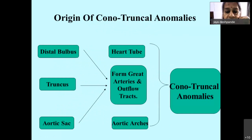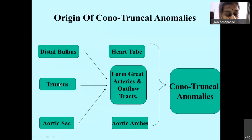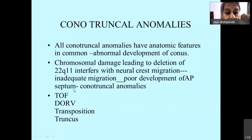For conotruncal anomalies, you need to know about the development of the heart tube, the formation of great arteries and outflow tract, and the aortic arches — the major parts being the distal bulbus, the truncus, and the aortic sac. All conotruncal anomalies share abnormal development of the conus, many related to microdeletion of chromosome 22q11 with neural crest migration failure causing poor development of the aortopulmonary septum. Examples include tetralogy of Fallot, double outlet right ventricle, transposition, and truncus.